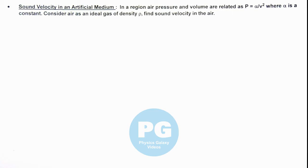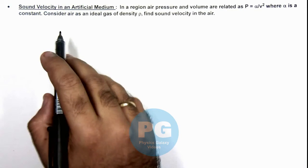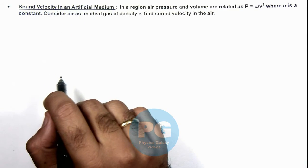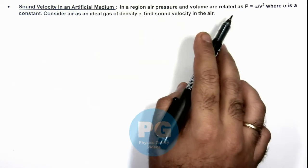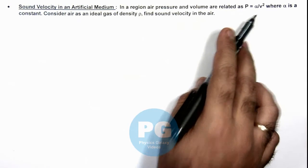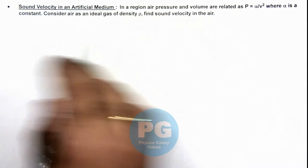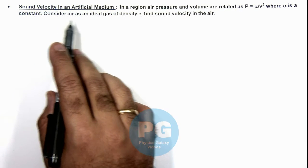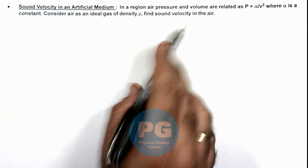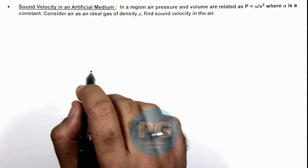In this illustration we'll discuss sound velocity in an artificial medium. We are given that in a region, air pressure and volume are related as P equals alpha by V squared, where alpha is a constant. And here we are required to consider air as an ideal gas of density ρ, we have to find the sound velocity in air.